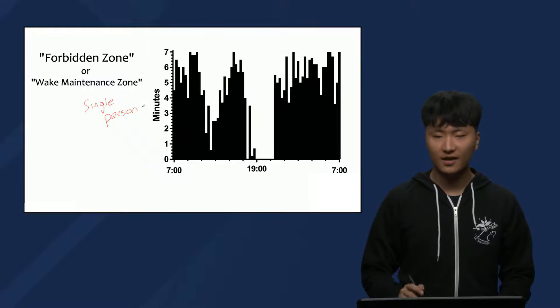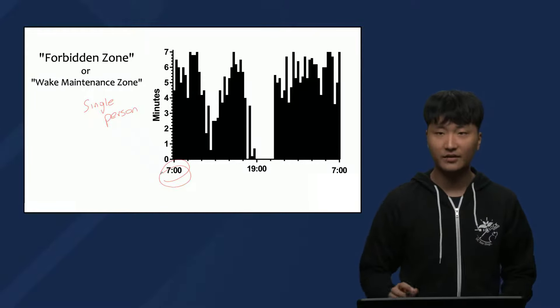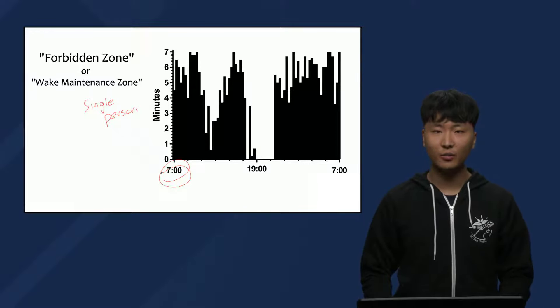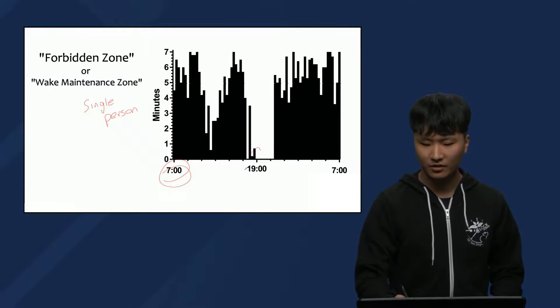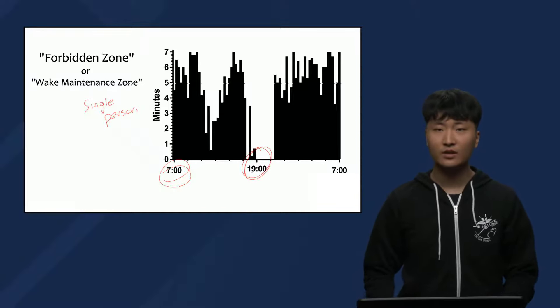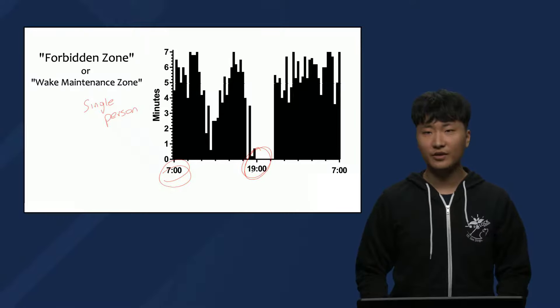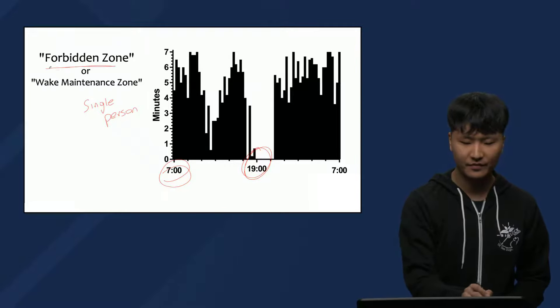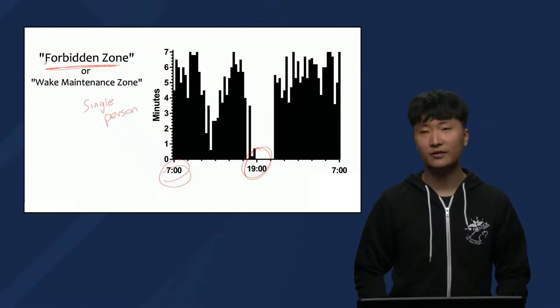Note that the x-axis shows a slightly different timeframe here, starting earlier in the morning this time. Looking at this participant's rhythm of sleep, there's an interesting point right here around 1900 or 7 p.m. As you can see, the participant was not able to go to sleep at all here. This point is known as the forbidden zone for sleep, or the wake maintenance zone.